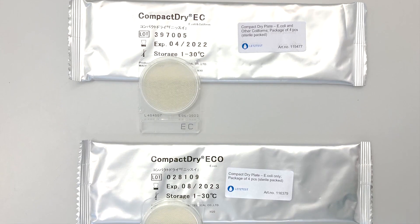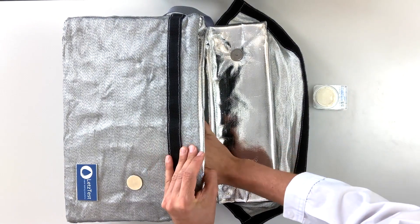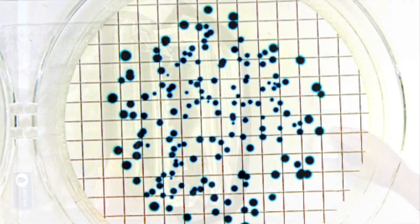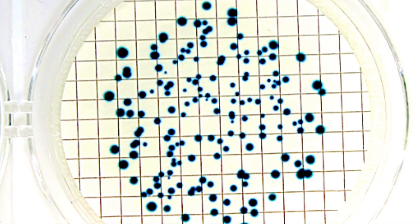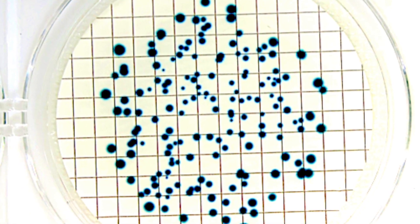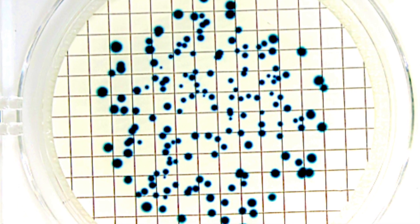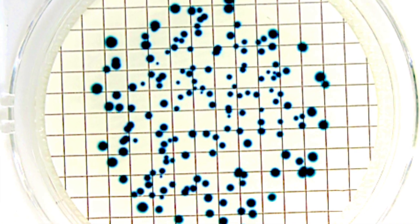If you have used the EC or ECO plate and the water sample was contaminated, then you will now see blue colonies for the fecal indicator bacterium E. coli. These blue colonies should be counted regardless of their size.